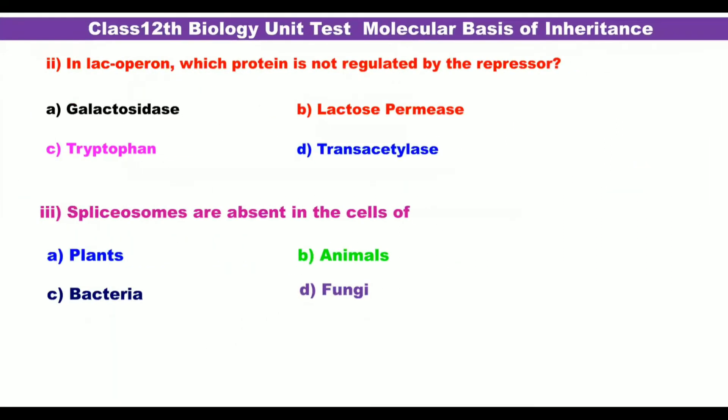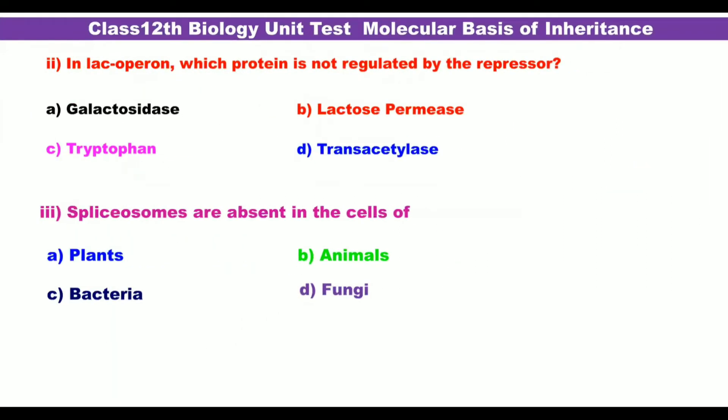The next MCQ question in Section A: In the lac operon, which protein is not regulated by the repressor? Options are: galactosidase, lactose permease, tryptophan, and transacetylase. Choose the correct option and write the answer with its alphabet letter in the answer sheet.